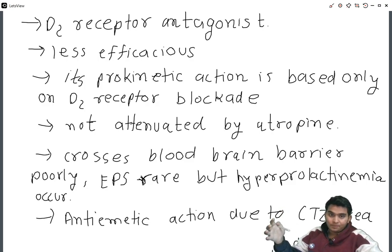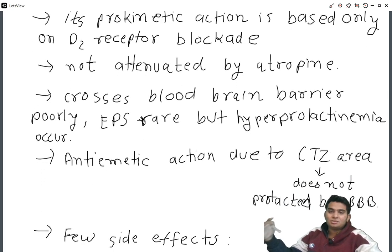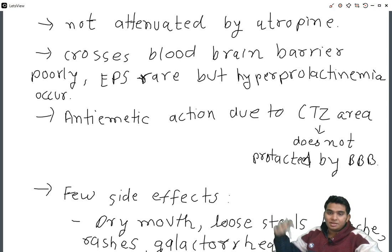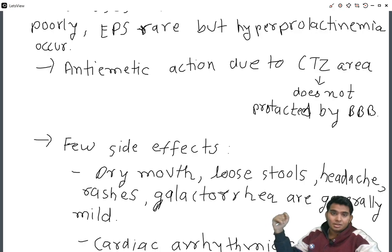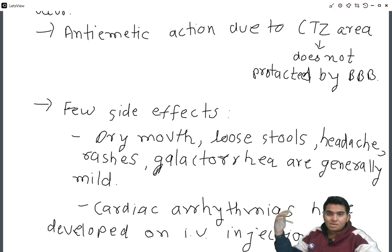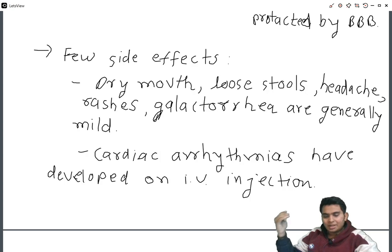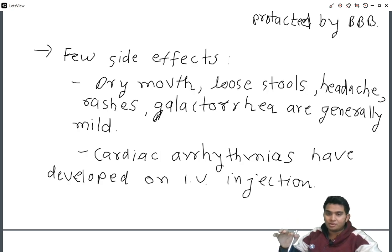Domperidone crosses the blood-brain barrier poorly, so extrapyramidal symptoms are rare, but hyperprolactinemia does occur. Its anti-emetic action is due to action on the CTZ area, which is not protected by the blood-brain barrier — also called circumventricular organs. Side effects include dry mouth, loose stools, headache, and mild galactorrhea. Cardiac arrhythmias have developed on intravenous injection. These are the two main drugs — metoclopramide and domperidone — used as prokinetic agents.